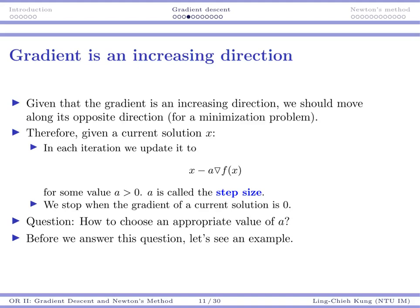Okay, so now we know gradient is an increasing direction. Given this, what we will do is to move along its opposite direction for minimization problem. So that's why this method is called gradient descent.